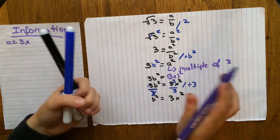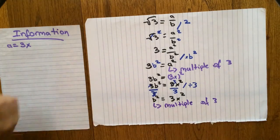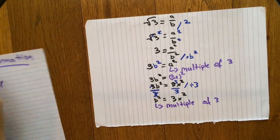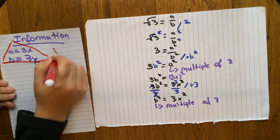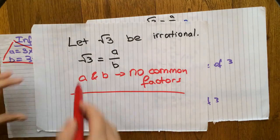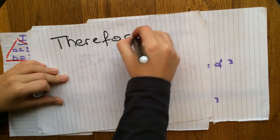So if 3x squared is equal to b squared, that means that b squared, or b, must be a multiple of 3 as well. And we write that down in our information log. But we notice there's a problem, because according to our previous statement, a and b can have no common factors, while they seem to have 3 as a common factor. Therefore, we can conclude that square root of 3 is irrational.